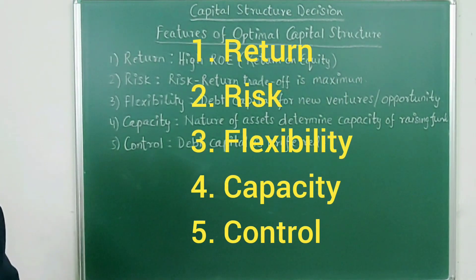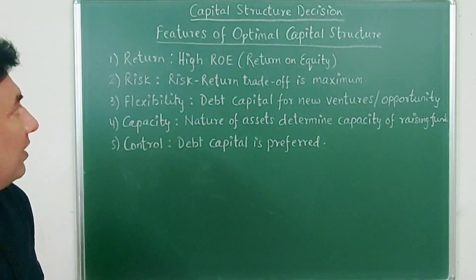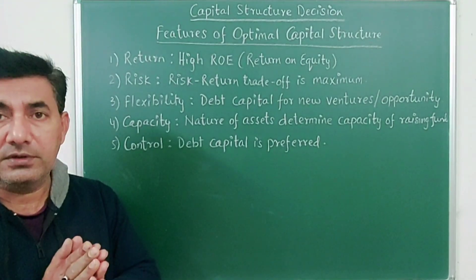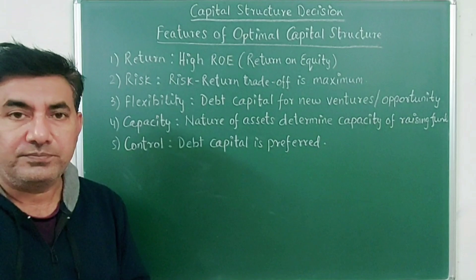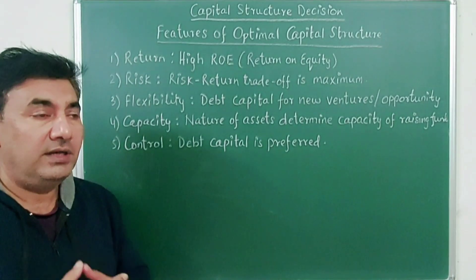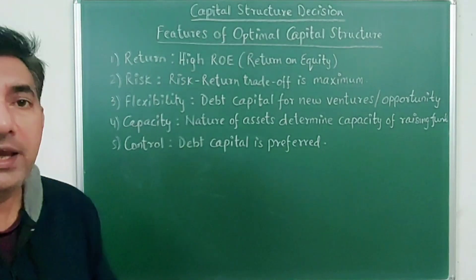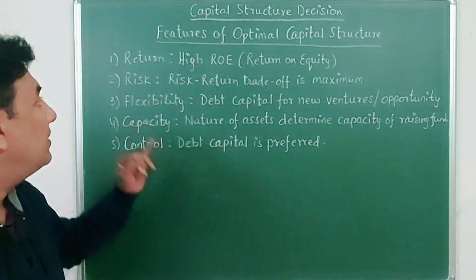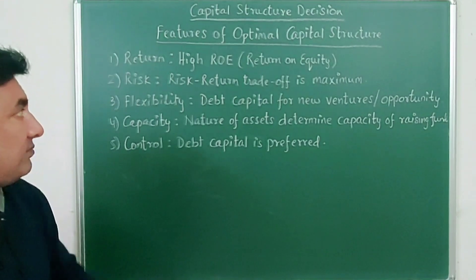The first feature is return. The company should choose sources of funds where the return on equity (ROE) is high — where it is able to pay higher returns to the shareholders so that the company can increase its market value. So the first consideration is high return on equity.